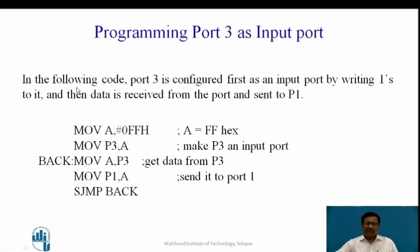Since we know already, when using Port 3 as an input port, it must be configured first by writing once to it, then data is received from the port and sent to P1. The first two instructions configure Port 3 as an input port by writing #0FFH. Then Port 3 is read using MOV A, P3, sent to Port 1, and this loops continuously — whatever is on Port 3 is continuously sent to Port 1.